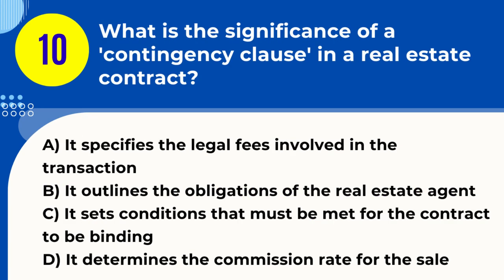Question 10. What is the significance of a contingency clause in a real estate contract? A. It specifies the legal fees involved in the transaction. B. It outlines the obligations of the real estate agent. C. It sets conditions that must be met for the contract to be binding. D. It determines the commission rate for the sale. Answer: C. It sets conditions that must be met for the contract to be binding.